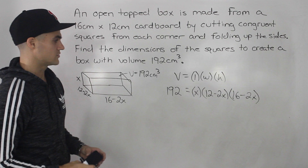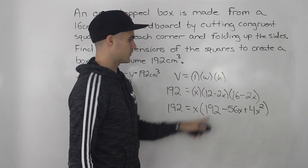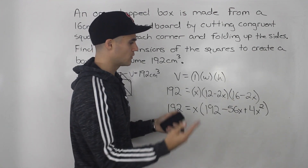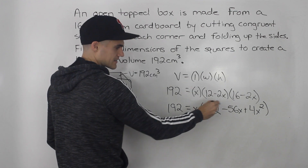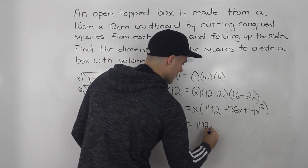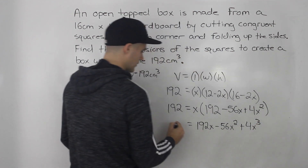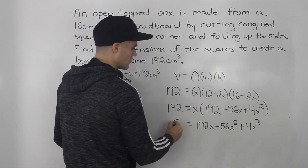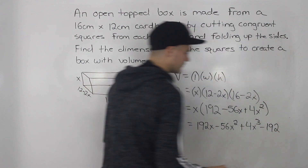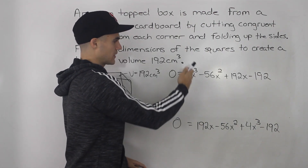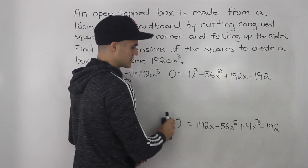Now we have an equation, so we need to expand the right side, bring the 192 over, and solve a polynomial equation. First, FOILing the two brackets (12 minus 2x)(16 minus 2x) gives 192 minus 56x plus 4x squared. Distributing x gives 192x minus 56x squared plus 4x cubed. Bringing 192 over to the right side and rearranging from highest to lowest degree, we get 0 equals 4x cubed minus 56x squared plus 192x minus 192.